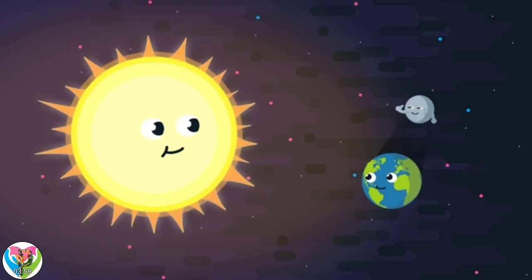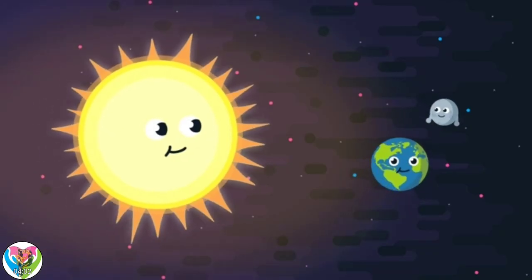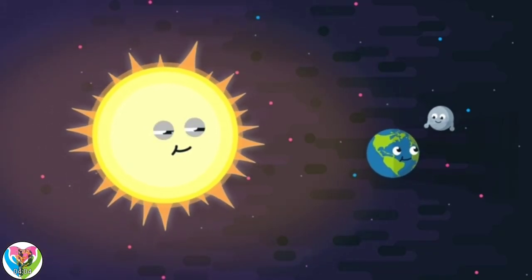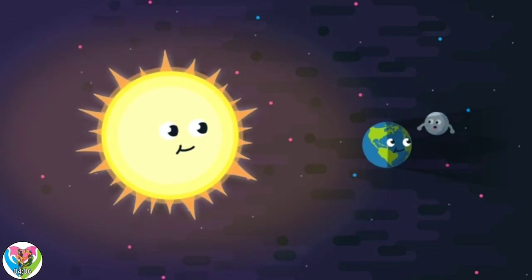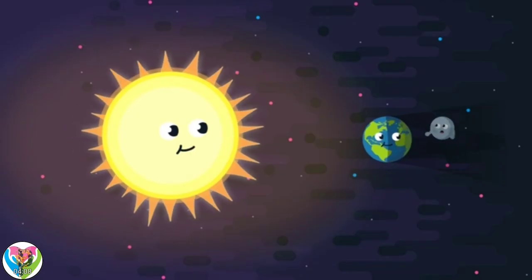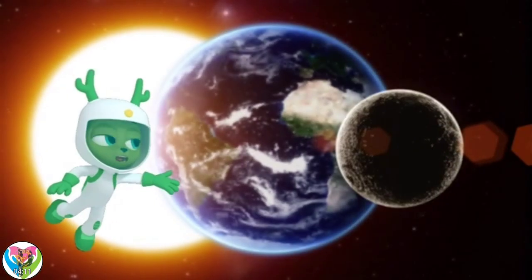The Moon looks like it's shining, but it doesn't have any light of its own. It's light that's reflected from the Sun. Can you see what's happening? The Earth is making a shadow!